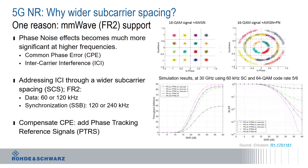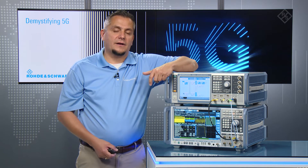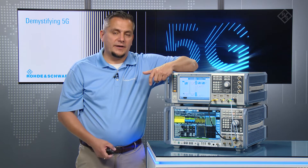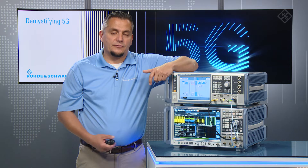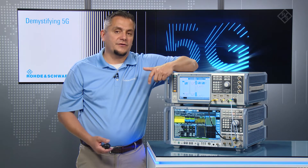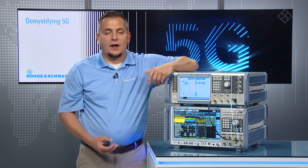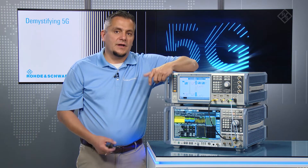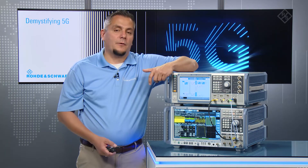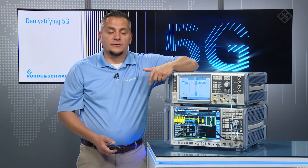The phase tracking reference signals are optional in the standard. They can be applied in downlink as well as in uplink, and they should be utilized by the receiver to compensate the common phase error. Basically, you design an algorithm that uses the additional information obtained while measuring the phase tracking reference signals and compensates for the CPE.